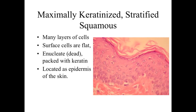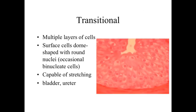We'll talk about the skin in more detail when we discuss it as an organ. The transitional epithelia is very obviously stratified, but looking at the surface cells, they are rounder — as opposed to the minimally keratinized stratified squamous which has very flat cells with flat nuclei. The transitional epithelia has many cell layers thick with rounded cells and rounded nuclei at the surface. These cells are capable of stretching and changing their shape, and we see them in areas like the urinary bladder and the ureter.